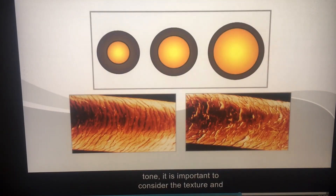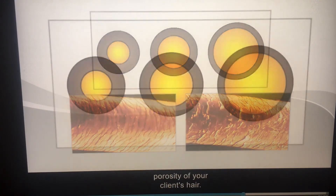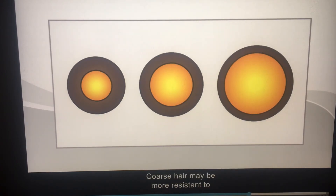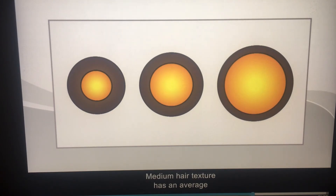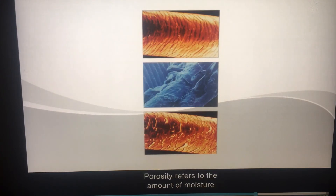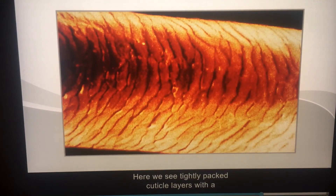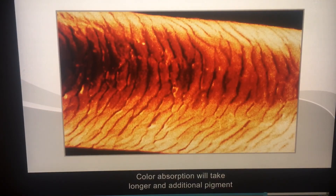Besides level and tone, it is important to consider the texture and porosity of the hair. Texture refers to the coarseness or fineness of the hair fiber. Coarse hair may be more resistant to lightening than fine hair, while medium hair texture has an average response to hair products. Porosity refers to the amount of moisture hair is able to absorb. Here we see tightly packed cuticle layers with a resistant porosity, meaning color absorption will take longer and additional pigment may be needed.